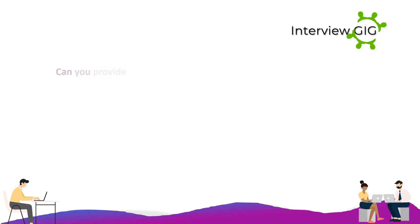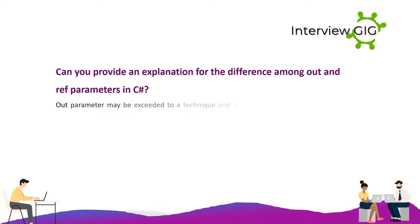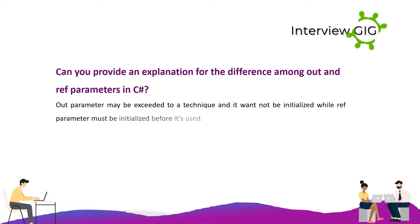What is the difference between out and ref parameters in C#? An out parameter can be passed to a method and does not need to be initialized, whereas a ref parameter must be initialized before it is used.